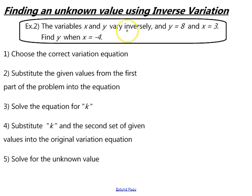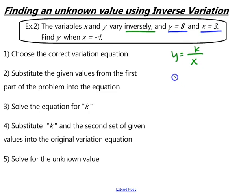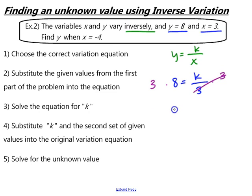Here it tells us that the variables x and y vary inversely. So first, we start with the correct equation: y equals k over x. Continuing, y equals 8 and x equals 3 — this is our first set of values that will help us determine the equation for the relationship of these variables. Substituting in: 8 equals k over 3. To solve for k, we multiply both sides by 3, and 3 times 8 gives us k equals 24.